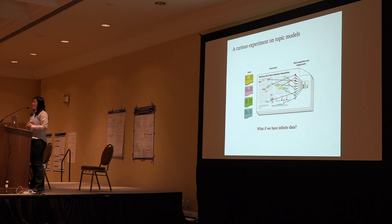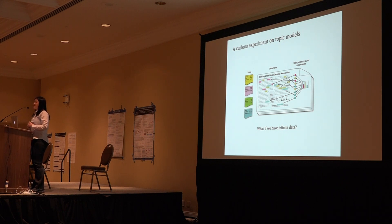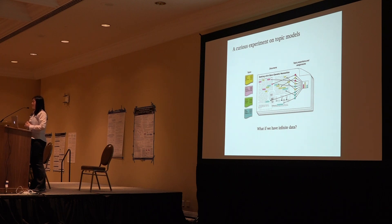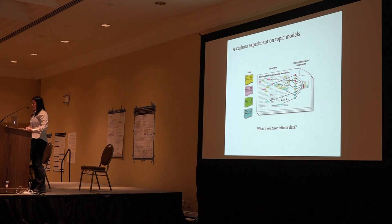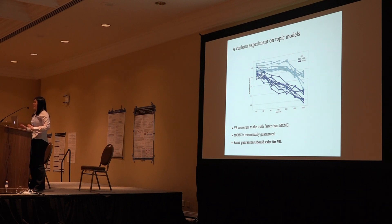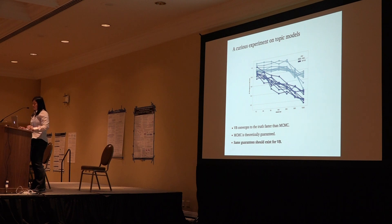What we did was to fix the topics at some true values, then generate a number of documents, and go back to infer the posterior of the topics given the simulated data. No matter what we do, if we have a proper posterior inference algorithm, we would have the posterior inferred from the simulated data coincide with the true value that we started with. We did precisely this on topic models: fixed the topics, generated the documents, and tried to infer the posterior of the topics given the simulated documents. Here is what we see in this particular experiment.